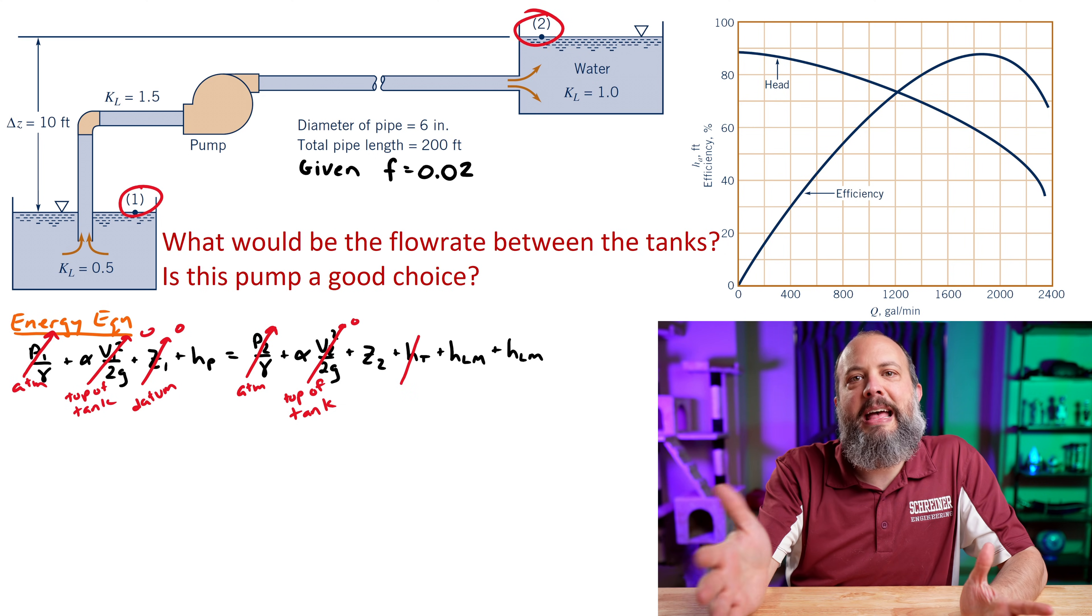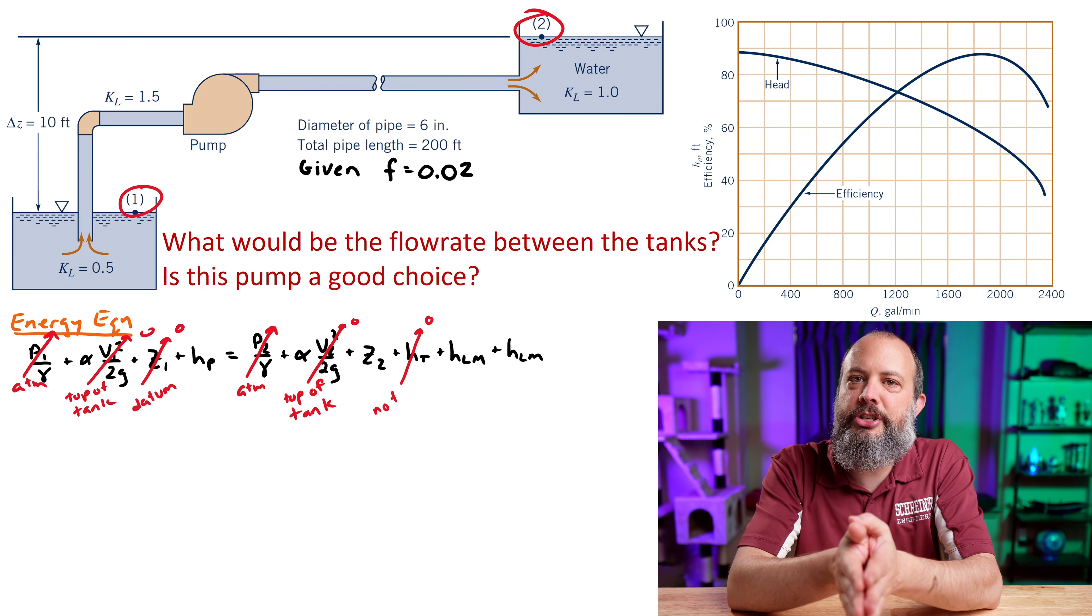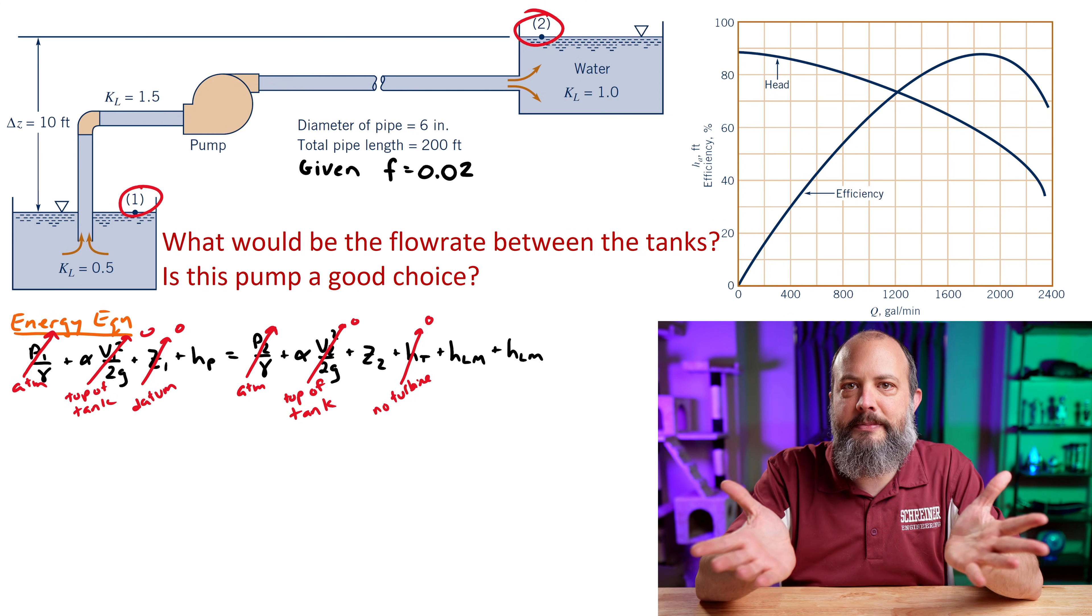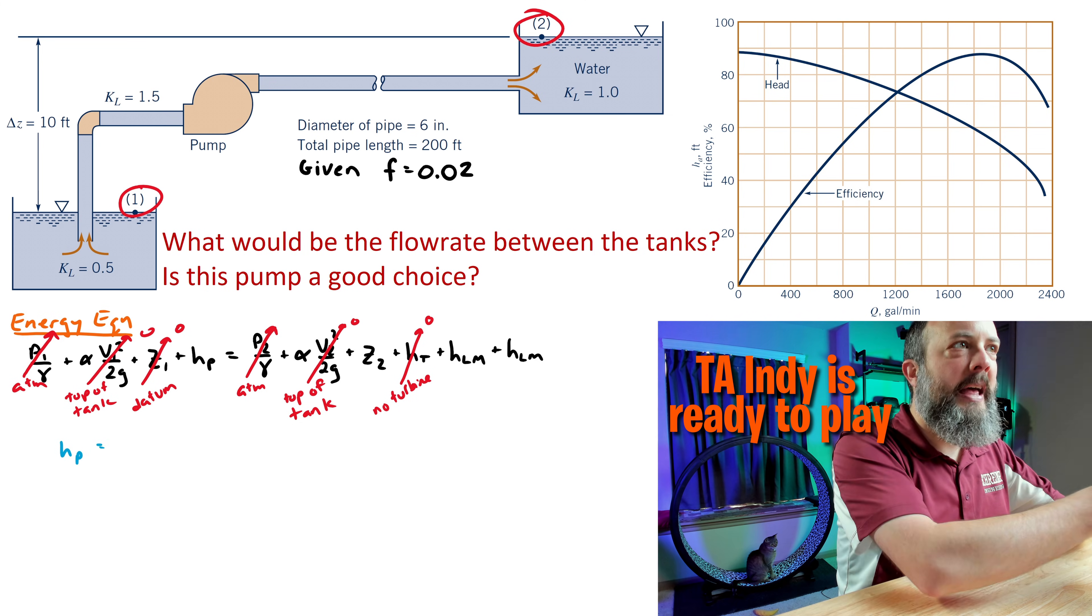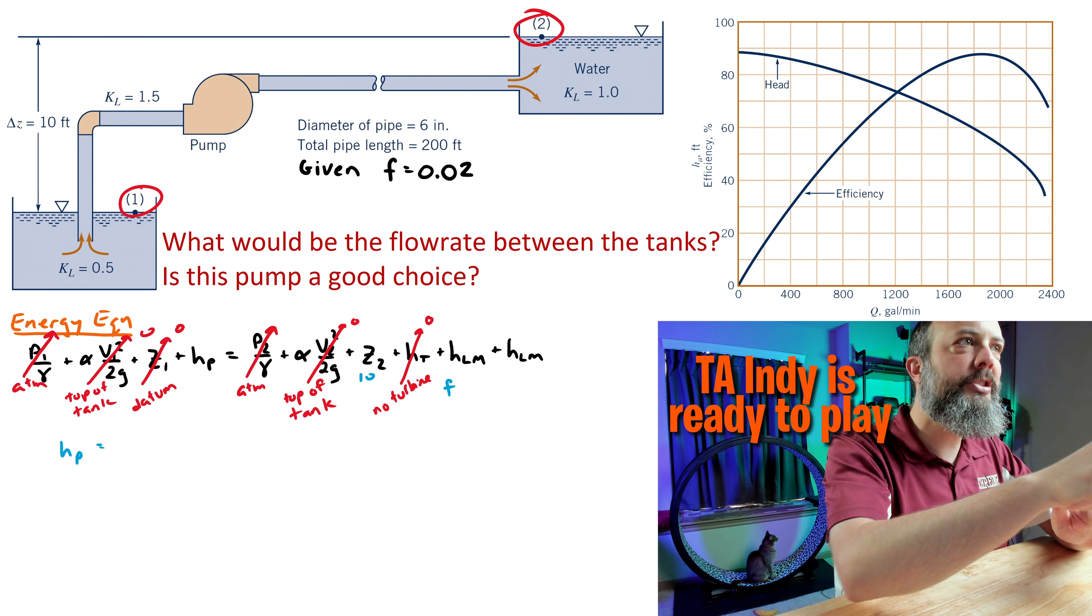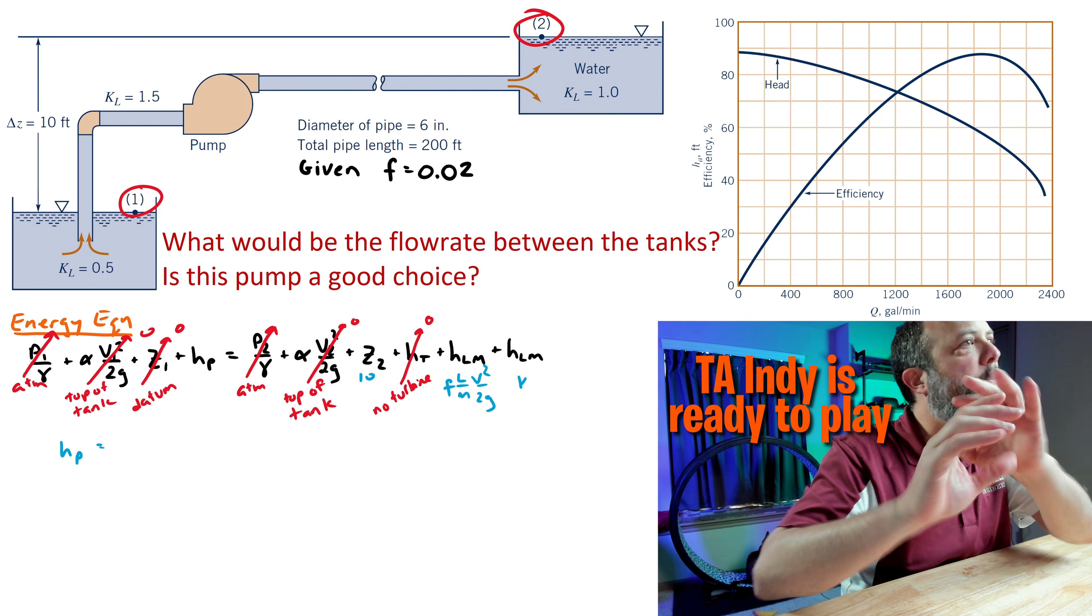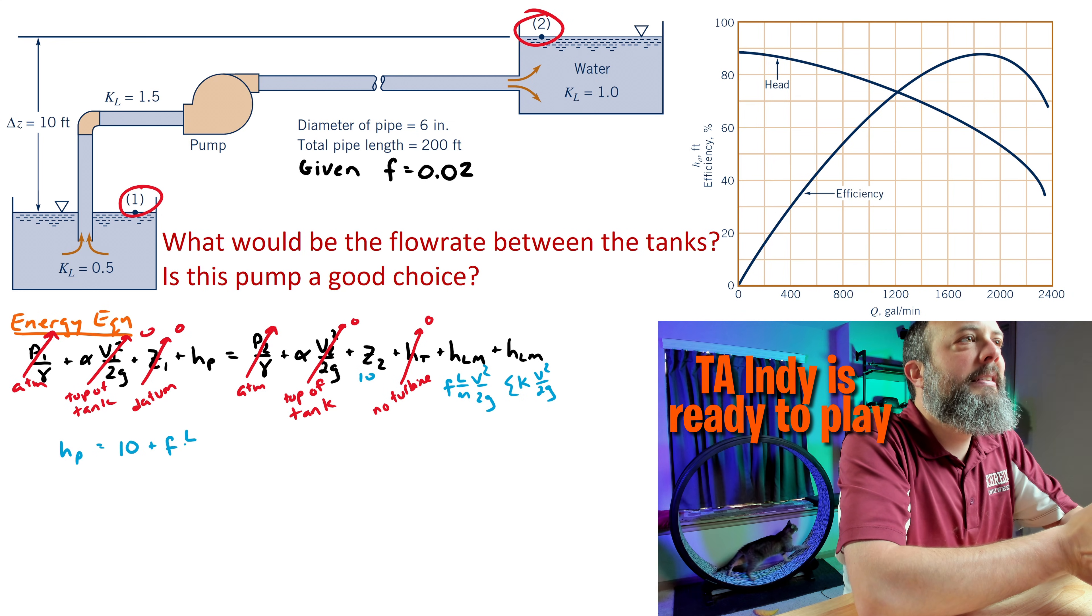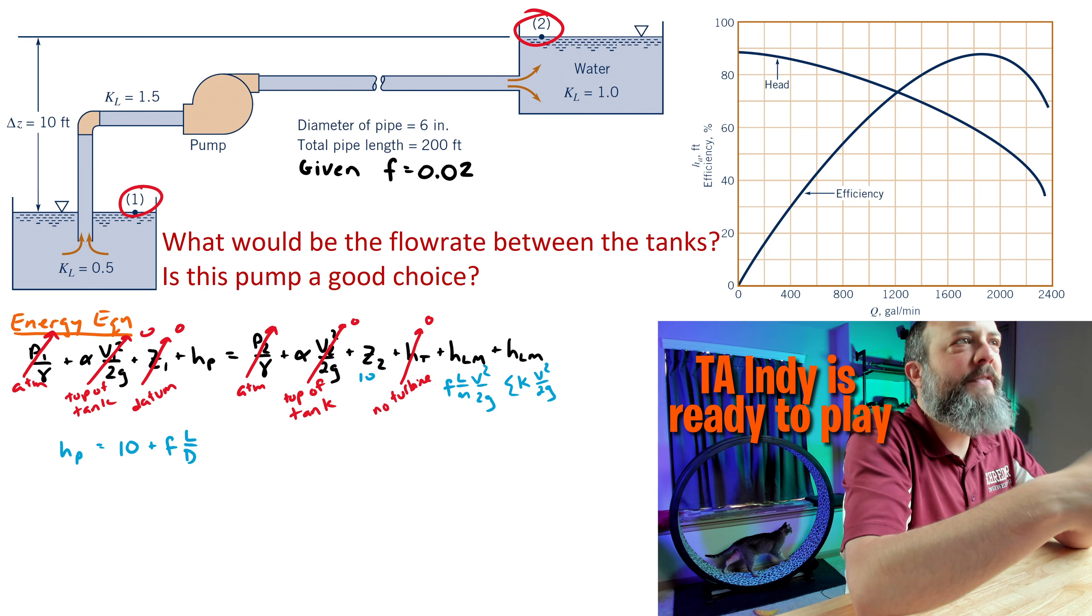I can call my datum 0 at point 1, so I've got a height of 10 feet over on the right-hand side, point 2, and the right-hand side is also where I put my head loss. My major loss is due to friction and minor losses due to all the other stuff, corners and whatnot. After crossing everything out, my pump head is equal to 10 plus my friction term plus my minor losses. The friction term is that Darcy-Weisbach equation.